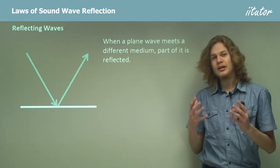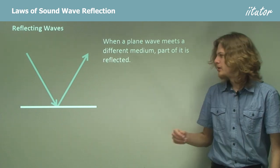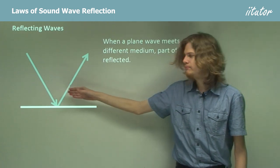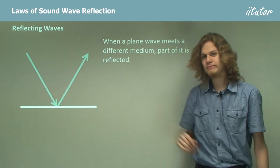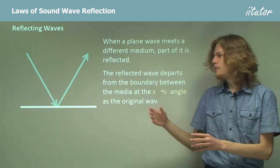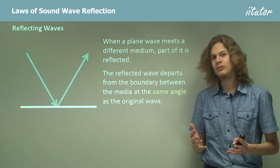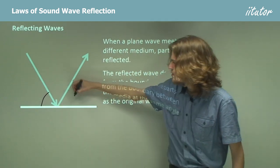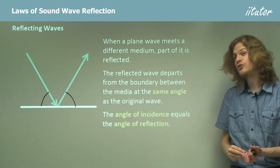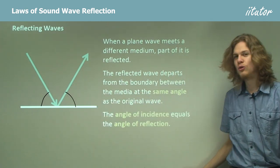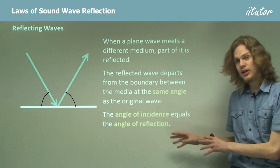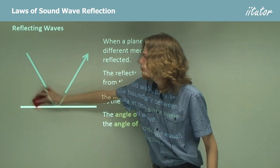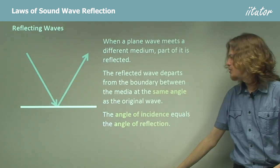When a plane wave meets a different medium, part of it will be reflected, as we can see in this diagram — the wave on the left is incident and the wave on the right is reflected. The reflected wave will come away from the boundary at the same angle as the incident wave meets it. In other words, the angle of incidence equals the angle of reflection. It's possible to solve problems about how waves reflect off different barriers simply by using this rule.